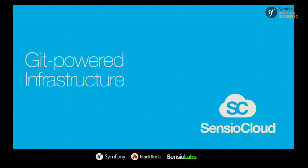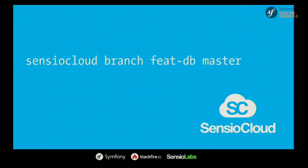The most interesting feature is that everything is defined alongside your code — those configuration files are stored alongside your code and are part of your git repository. This means your services and dependencies are managed as first-class git citizens. If you want to work on a new feature, you run 'sensio cloud branch feature-db' — it creates a new git branch but also creates a new branch for your services and dependencies. The configuration is part of the git repo, so it creates a new cluster of servers with all the services defined there.